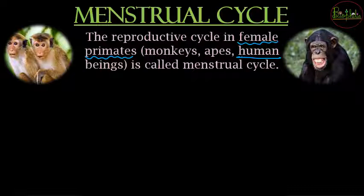The rest — non-primates — undergo the process called the estrus cycle. So estrus cycle and menstrual cycle are the two types. For human beings or primates, the menstrual cycle is followed.